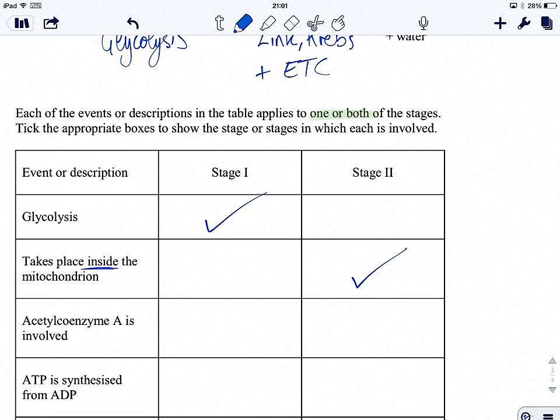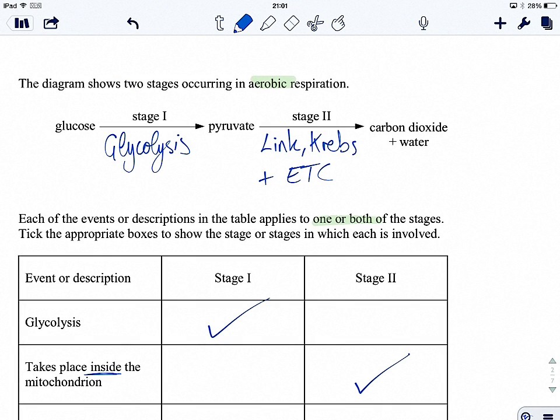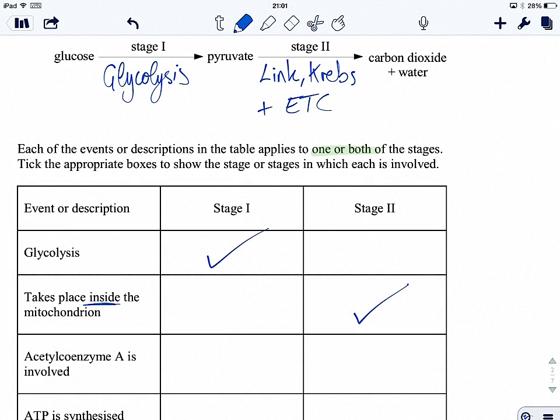So let's have a look at the next one. Acetyl coenzyme A is involved. Well, glucose to pyruvate, nope, not involved there. So it's not stage one. But in link reaction, link reaction is where we form acetyl-CoA and Krebs cycle is where we use it. So definitely stage two.